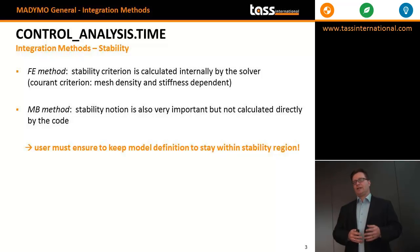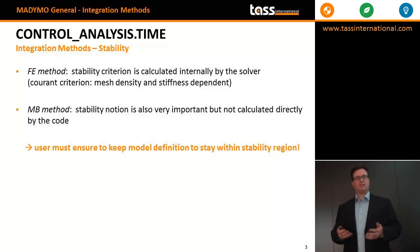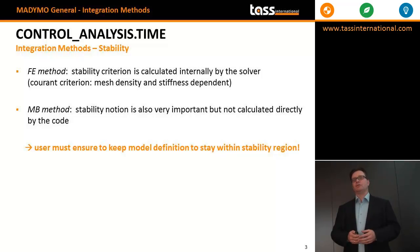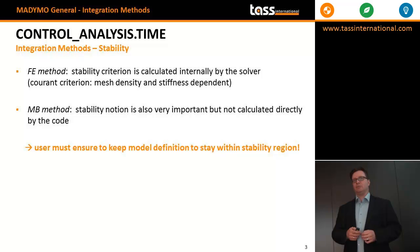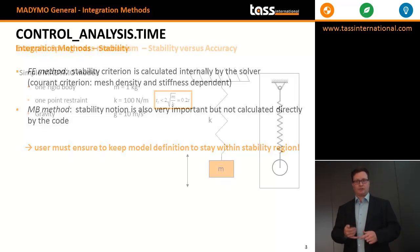For the finite element method, Manimo calculates the necessary time step based on the Courant criterion, and as a user you don't have to worry about that time step. The time step that you set on the control analysis time is the multibody time step, and that time step has to be chosen with care to make sure that the multibody integration is both stable and accurate.